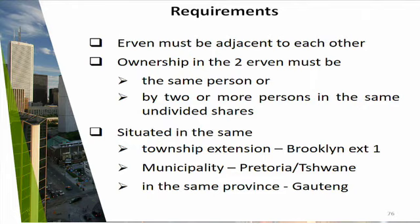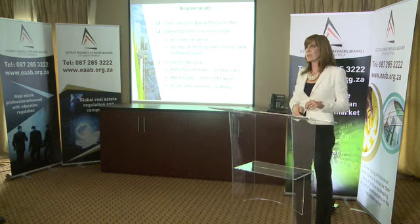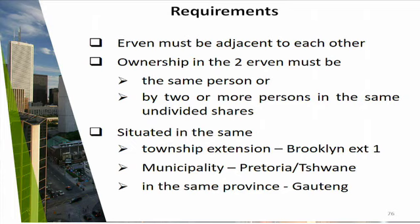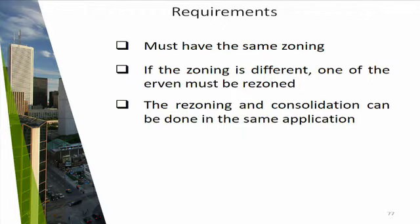The properties obviously need to be next to each other. The ownership must be in the same person's name — you have to take transfer of your neighbour's property so it's in your name before you can consolidate. It must also be in the same province and the same township — so if one property is in Alderaan Extension One and one is in Alderaan Extension Two, you won't be able to consolidate them. And lastly, they must have the same zoning — if one is residential one and the other is zoned for business, you can't consolidate before rezoning one to match the other.